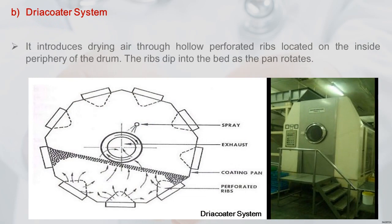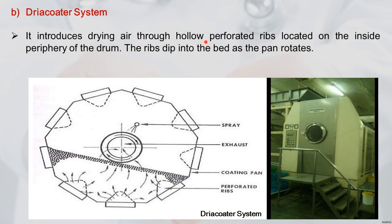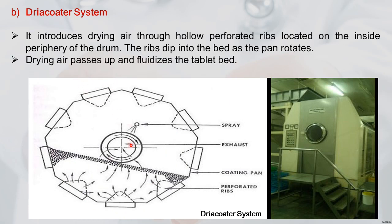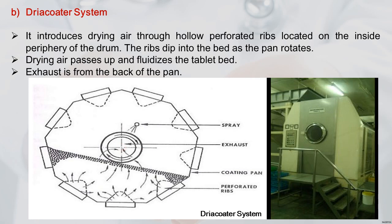The Dryer Coater system introduces drying air through hollow perforated ribs inside the periphery of the drum. These ribs dip into the tablet bed as the pan rotates. Drying air passes up and fluidizes the tablets, and the exhaust is from the back of the pan. Heated air comes in through the hollow ribs, causing partial fluidization of the tablet bed, with hot air exhausted at the back.